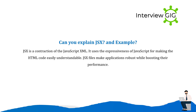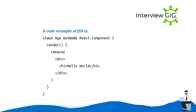Can you explain JSX with an example? JSX is a contraction of JavaScript XML. It uses the expressiveness of JavaScript for making HTML code easily understandable. JSX files make applications robust while boosting their performance. A code example of JSX is: class App extends React.Component { render() { return <div>Hello everyone!</div>; } }